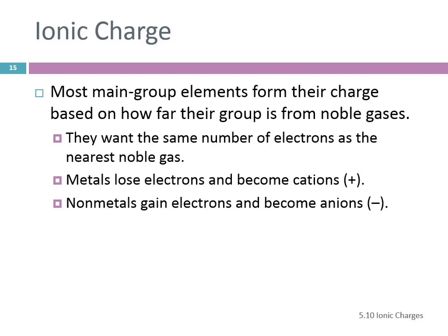The periodic table can help us to predict the ionic charges of the main group elements. One way to think about that is it's based on how far the group that element is in is from the noble gases.